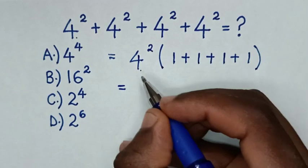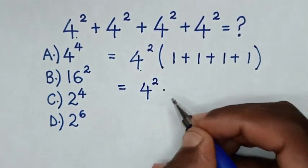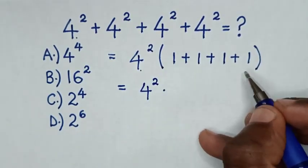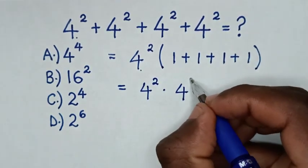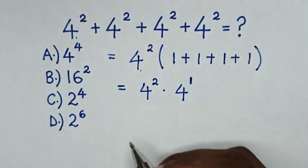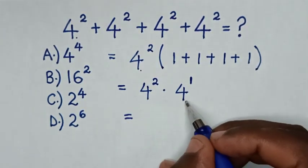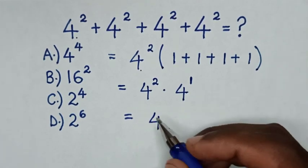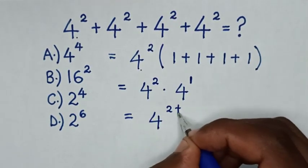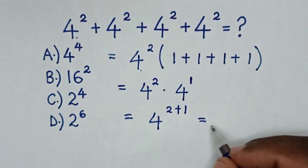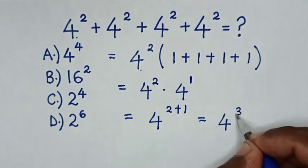So it will be equal to 4 power of 2 times (1 plus 1 plus 1 plus 1), which is 4. This 4 is the same as 4 power of 1, so because we have multiplication of exponents with the same base of 4, it will be 4 power of 2 plus 1, which equals 4 power of 3.